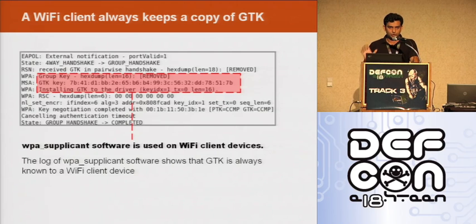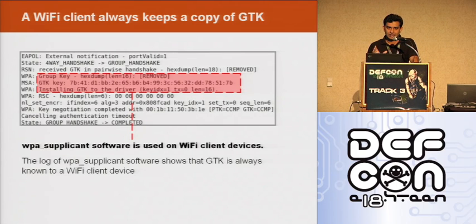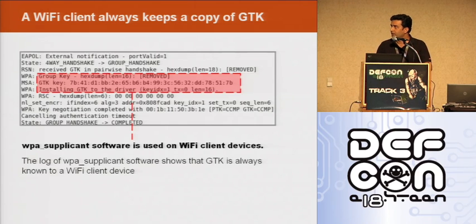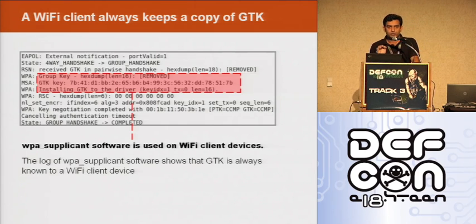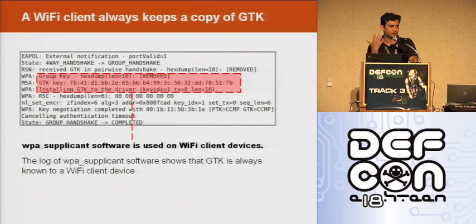Here I'm showing a log of a Wi-Fi client device. There is a software called WPS Supplicant which runs on client devices, and it shows that the client has a copy of GTK available. The group key is always available to the client device. Why does the client keep a copy of GTK? Because it has to decrypt packets coming from the access point.